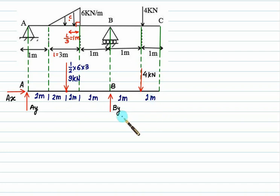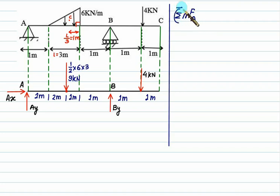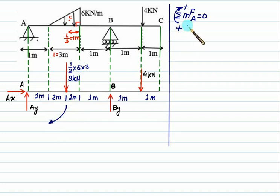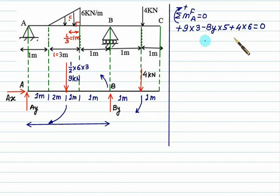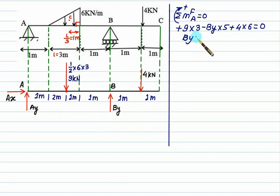Copy the remaining distances from the original figure. Take the sum of moments of all forces about fixed support A, with clockwise positive and sum equal to zero. Moments of Ax and Ay about A are zero. Moment of 9 kilonewton about A is clockwise, so plus 9 multiplied by 3. Moment of By about A is anticlockwise, so minus By multiplied by 5 (distance is 1 plus 2 plus 1 plus 1 equal to 5). Moment of 4 kilonewton is clockwise: plus 4 multiplied by 6. Solving this equation gives By equal to 10.2 kilonewton.